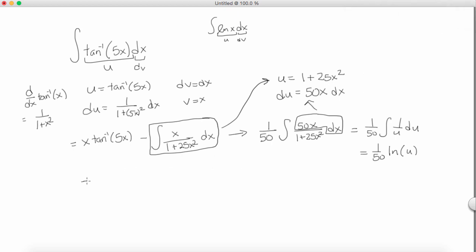So, now putting it all together, we have over here equals x arctangent of 5x minus, here's the integral here, 1 over 50, natural log of u.